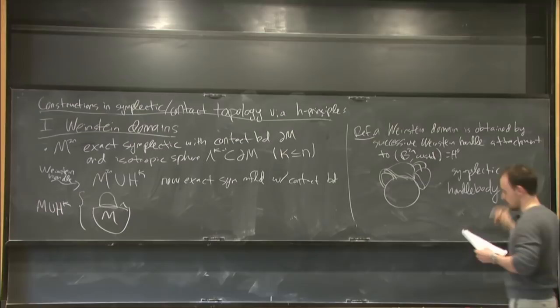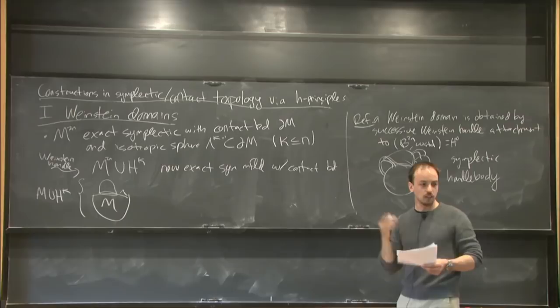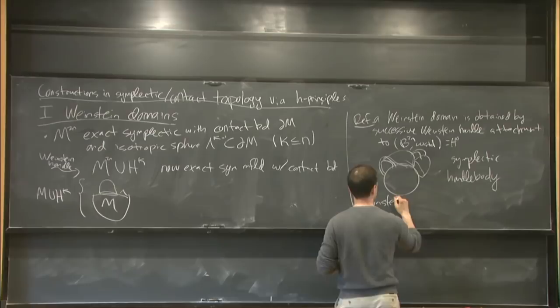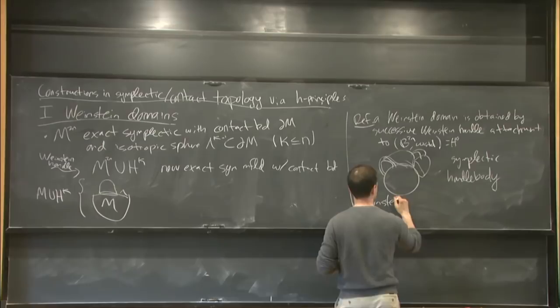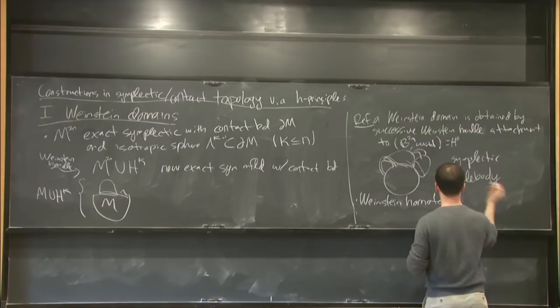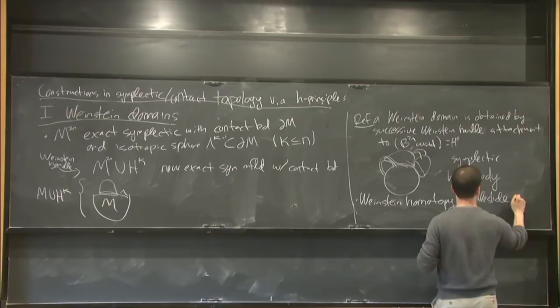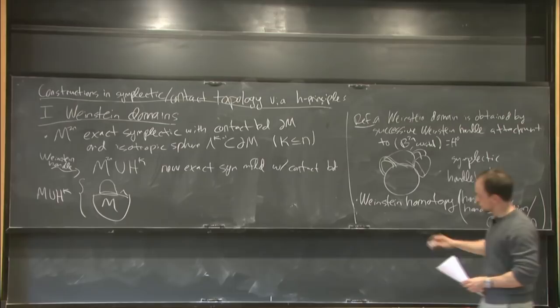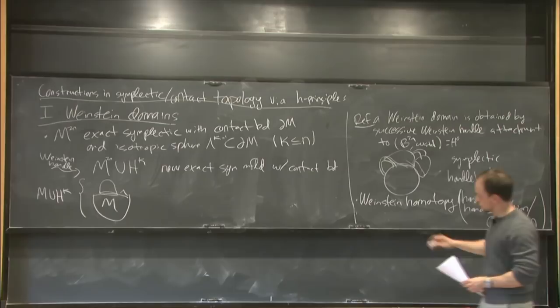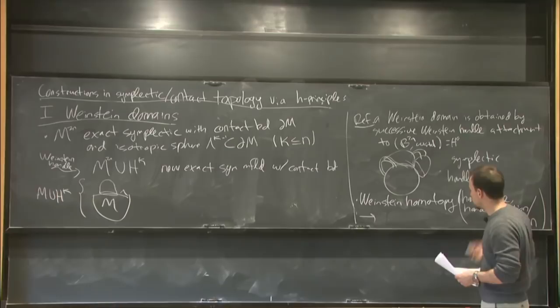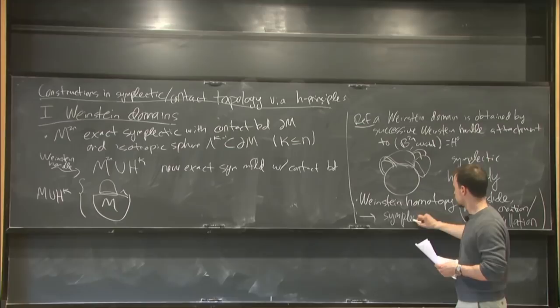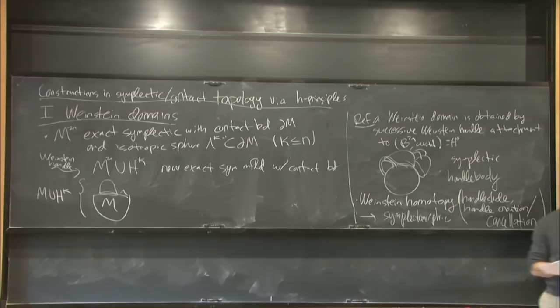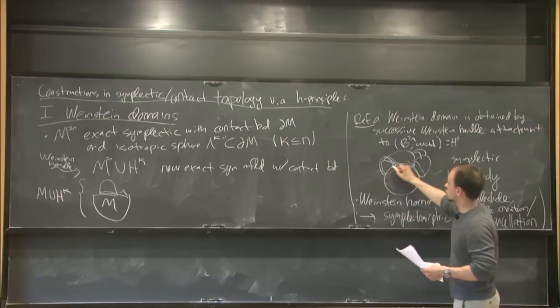Like smooth handle bodies, there's a notion of handle moves called Weinstein homotopy. These are handle moves — something like a handle slide, handle creation, and handle cancellation. Two Weinstein domains which are Weinstein homotopic, meaning you do these handle moves, have completions that are symplectomorphic. So the symplectic topology doesn't change in these moves. We can study Weinstein domains in terms of the attaching spheres — these isotropic and Legendrian attaching spheres — up to handle moves.